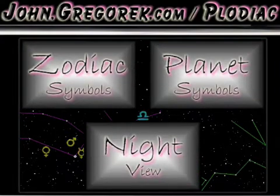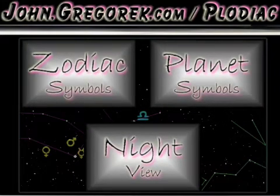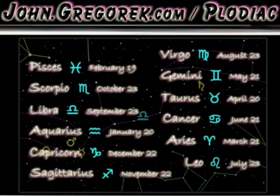Tapping the screen reveals three options. The zodiac symbol page shows the names and starting astrological dates. From here we see the current zodiac period is Libra.